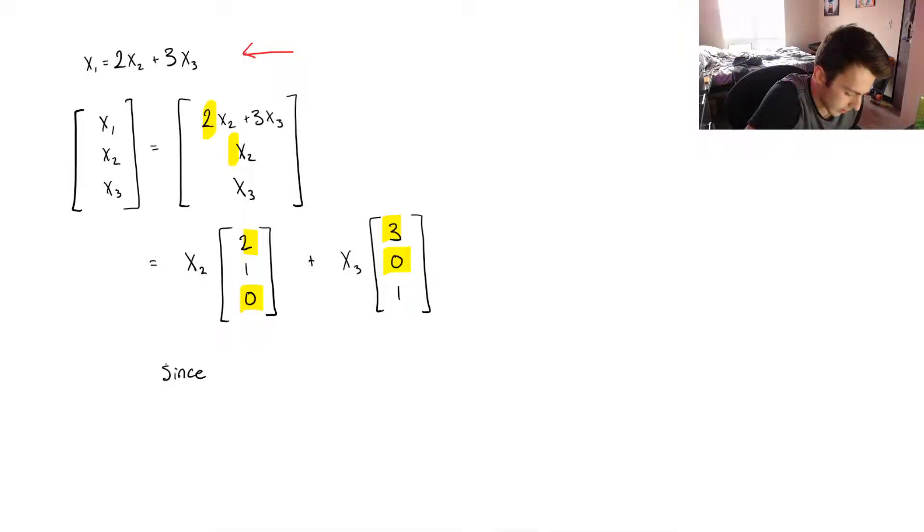So, since they are, since they're not 0 and they're not parallel, which are scalar multiples, then, therefore, we can say that 2, 1, 0, or let me just say they are linearly independent.